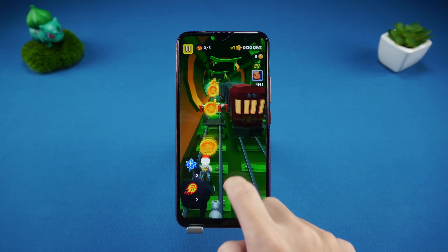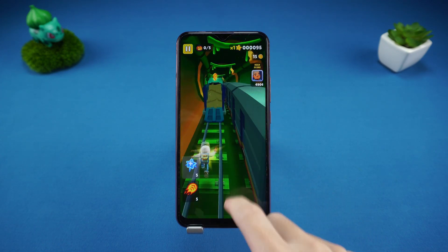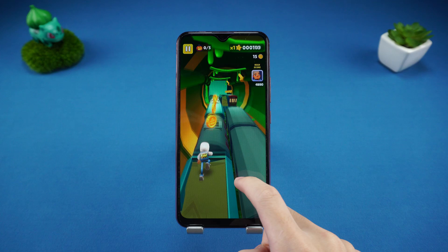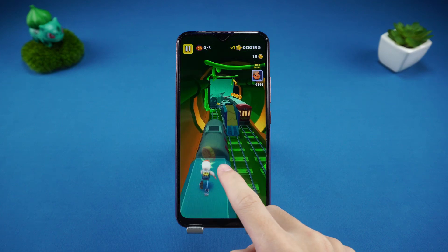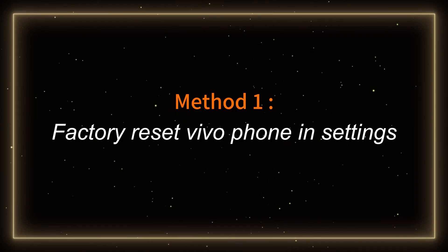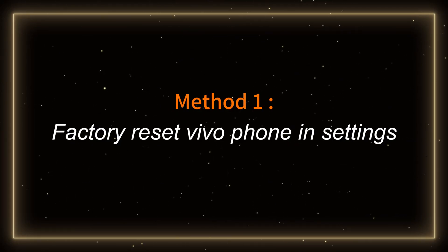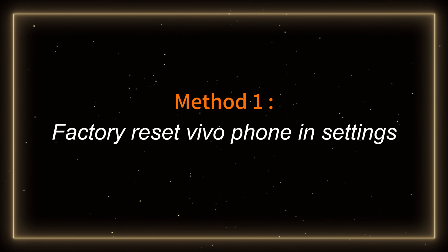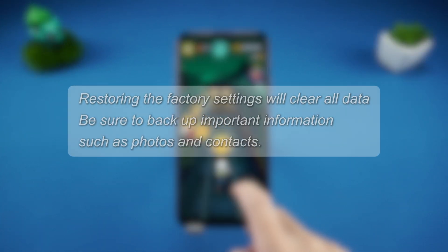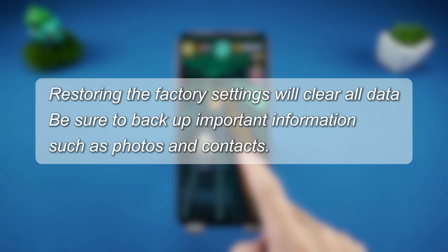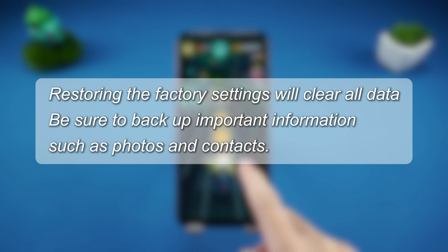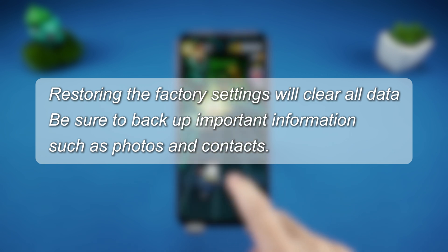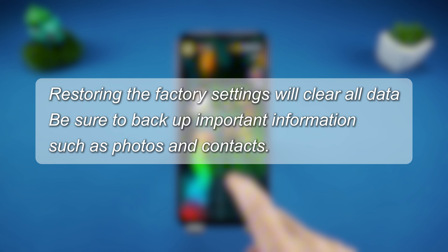I will show you two common methods of restoring the factory settings of Vivo phones. Method 1: Factory reset Vivo phone in Settings. Before we start, I must tell you that restoring the factory settings will clear all data, so be sure to back up important information such as photos and contacts.